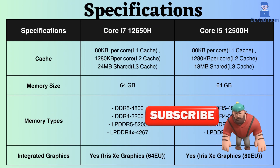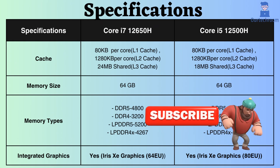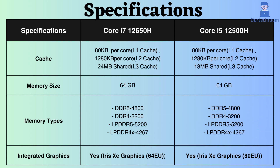In terms of cache size, both the Core i7 and i5 have 80 KB per core and 1,280 KB per core respectively. The Core i7-12650H has 24 MB shared cache, while the Core i5-12500H has 18 MB shared cache. Having a larger cache size contributes to faster data access and reduced latency.